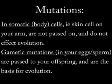However, it can also occur in some of your gametic cells, such as your egg or your sperm. If you have a mutation in a gamete and that egg or sperm goes on to produce a child, that mutation will be present in all of your children's body cells.